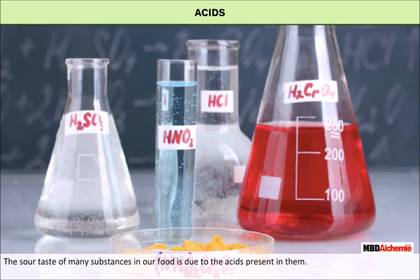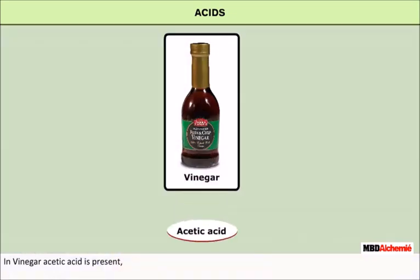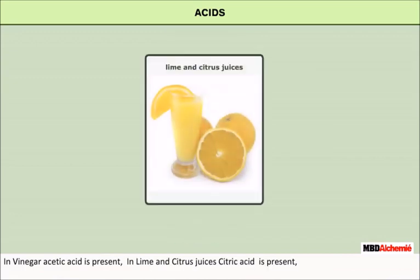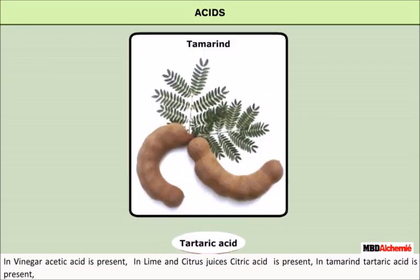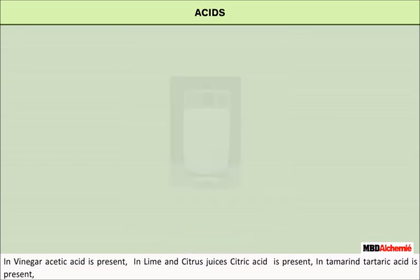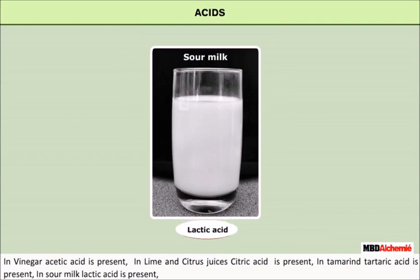For example, in vinegar, acetic acid is present. In lime and citrus juices, citric acid is present. In tamarind, tartaric acid is present. Similarly, in sour milk, lactic acid is present.